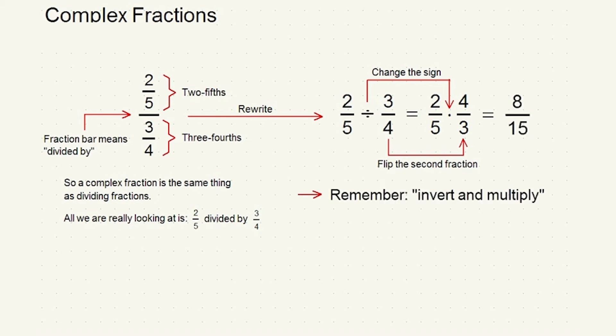2 times 4 is 8, and 5 times 3 is 15. So, 2 fifths over 3 fourths equals 8 fifteenths.